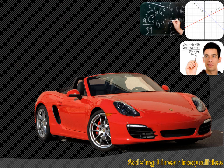There are four inequality symbols you're going to have to remember and use. The first is X is less than 21. This is the less-than symbol, and it's easy to remember because the smaller end of the less-than symbol points towards the smaller of the two numbers, and the larger end is towards the larger of the two numbers. So X is smaller than 21.